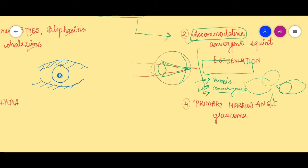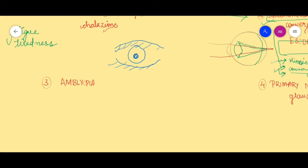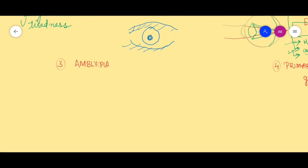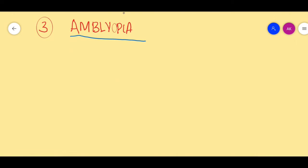Coming to the third type of complication - what else can develop in patients when we don't give them refractive error correction? They can develop something called amblyopia. There are three types of amblyopia which can develop in these people.